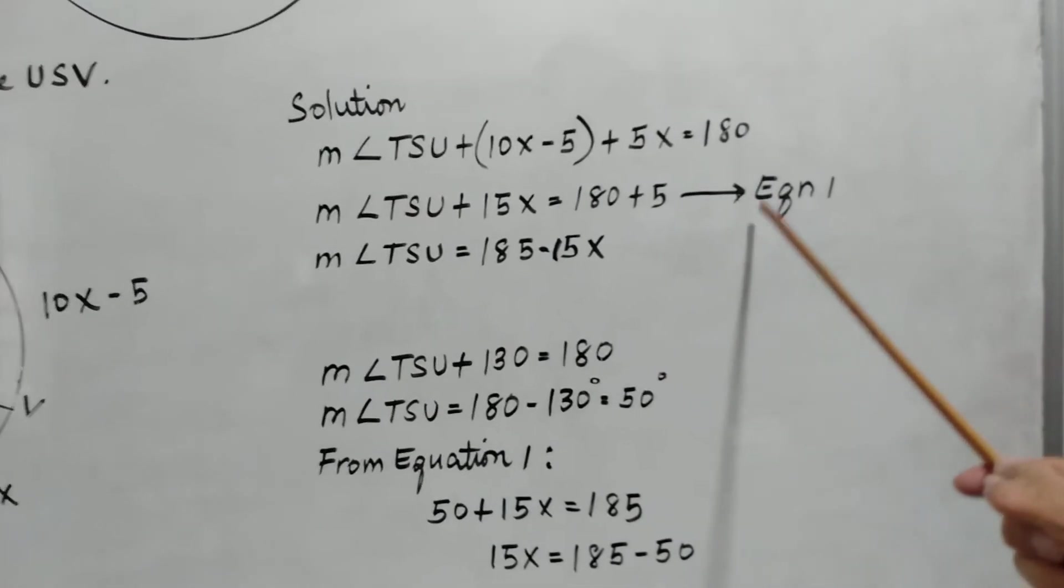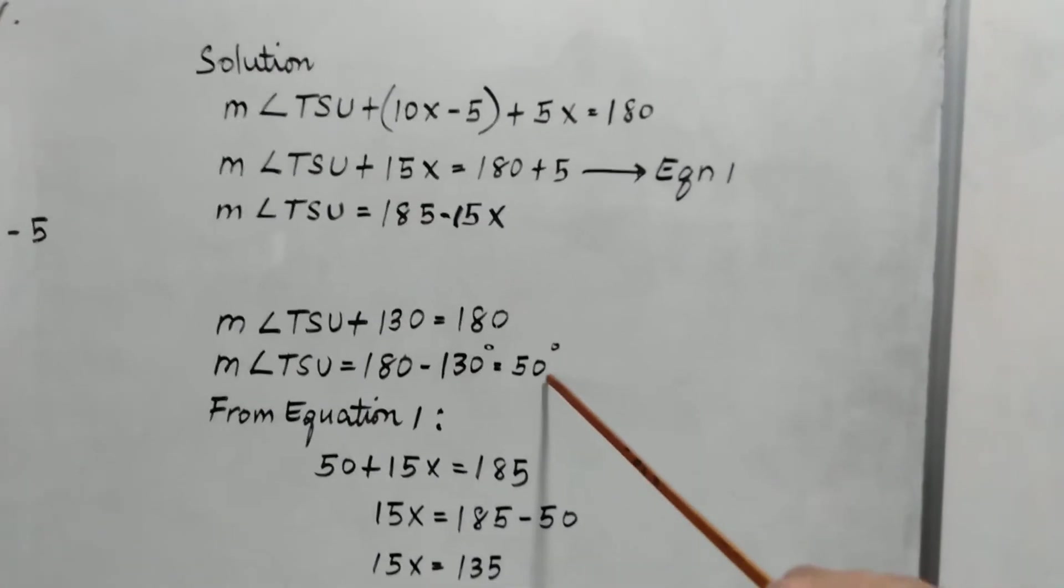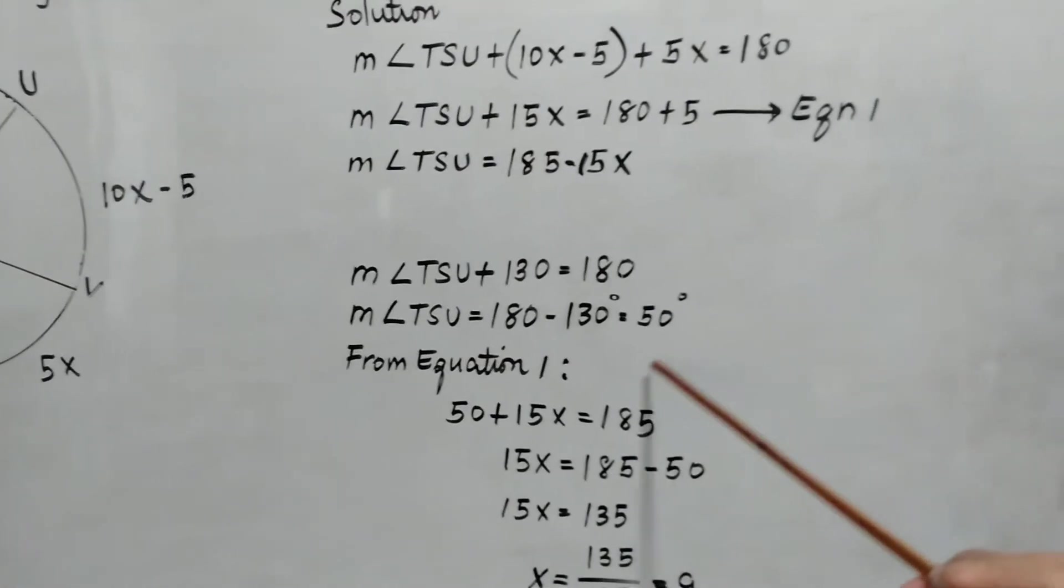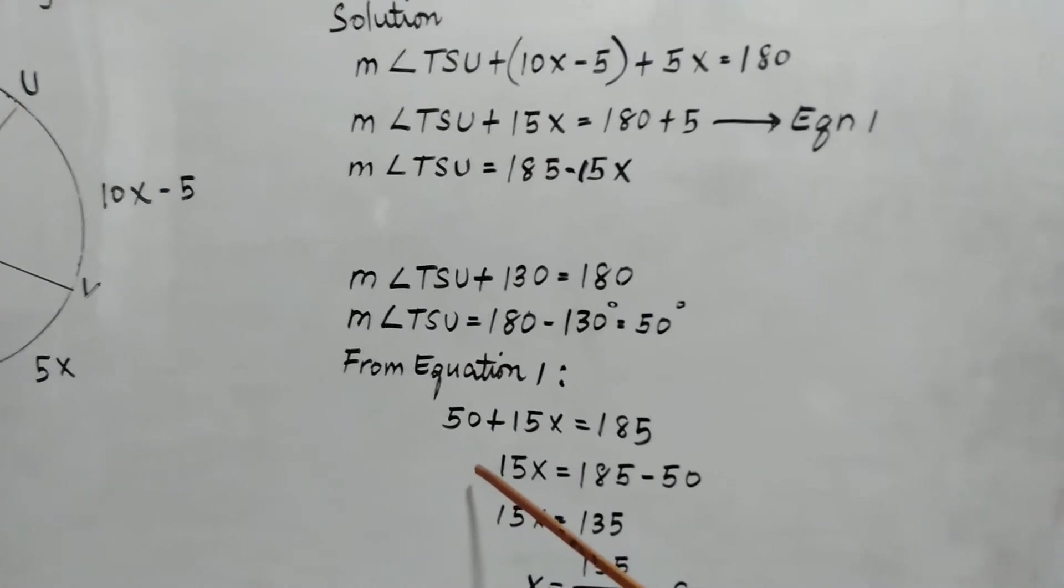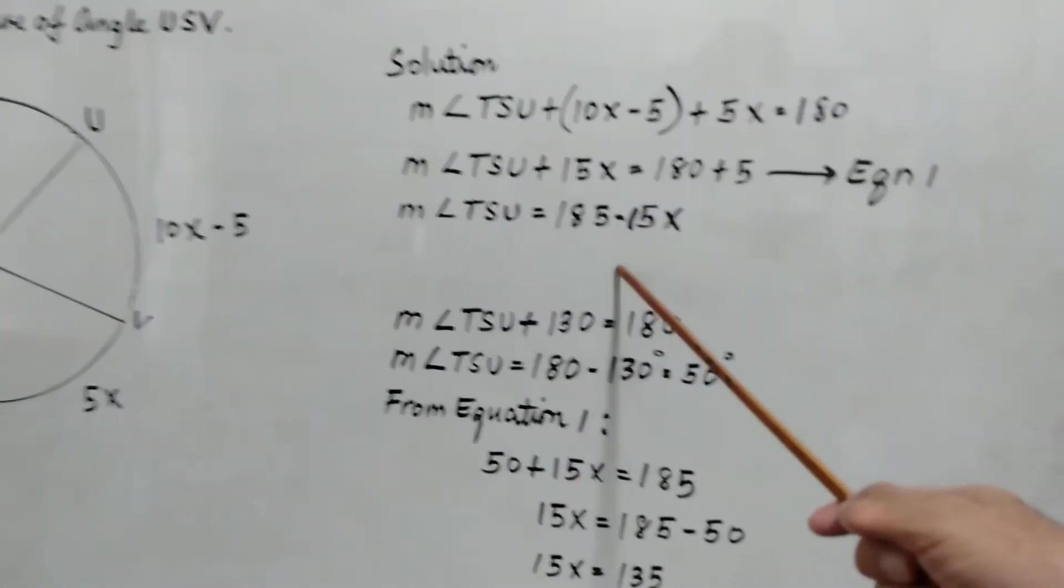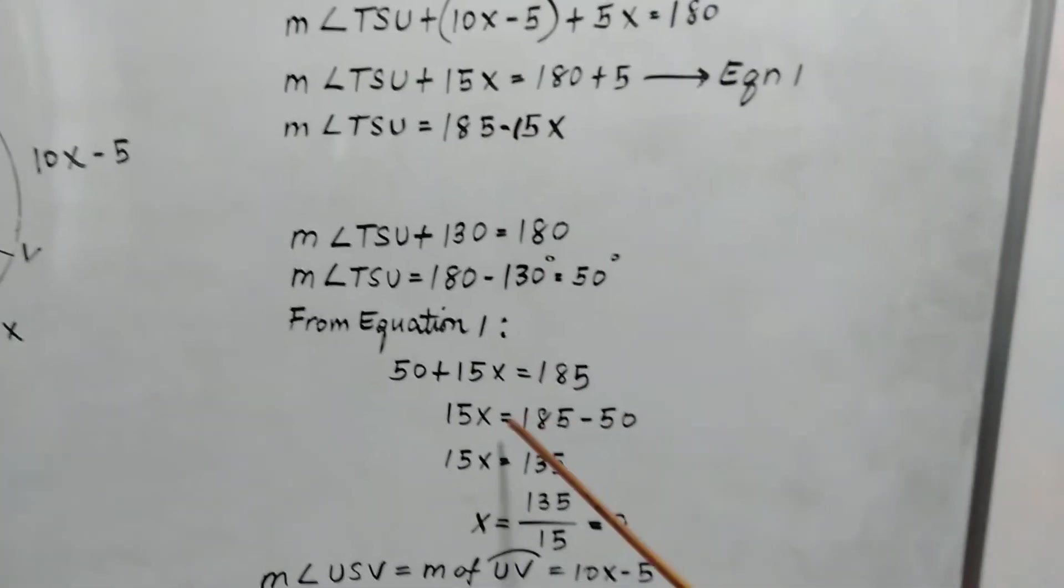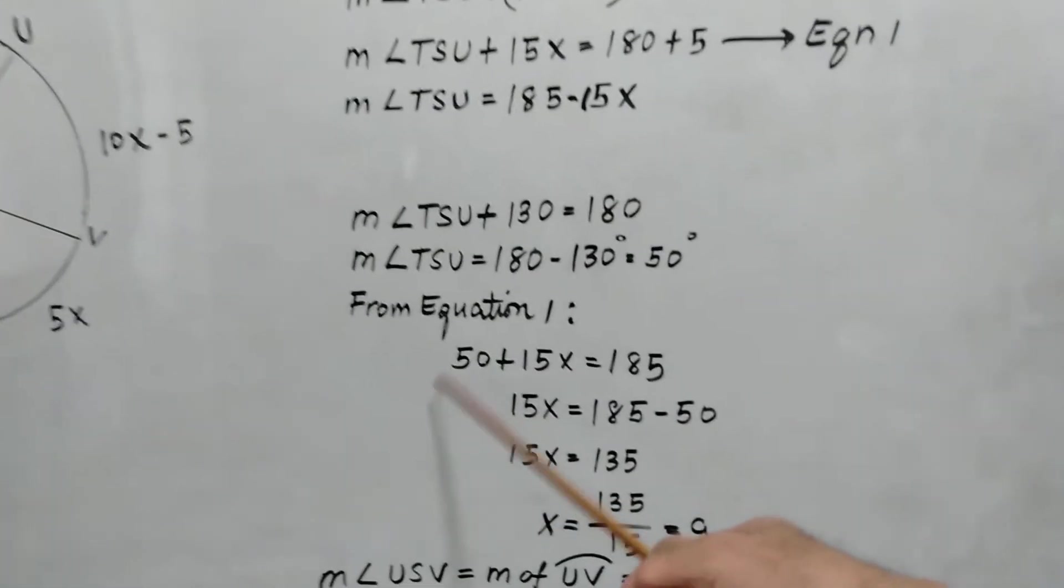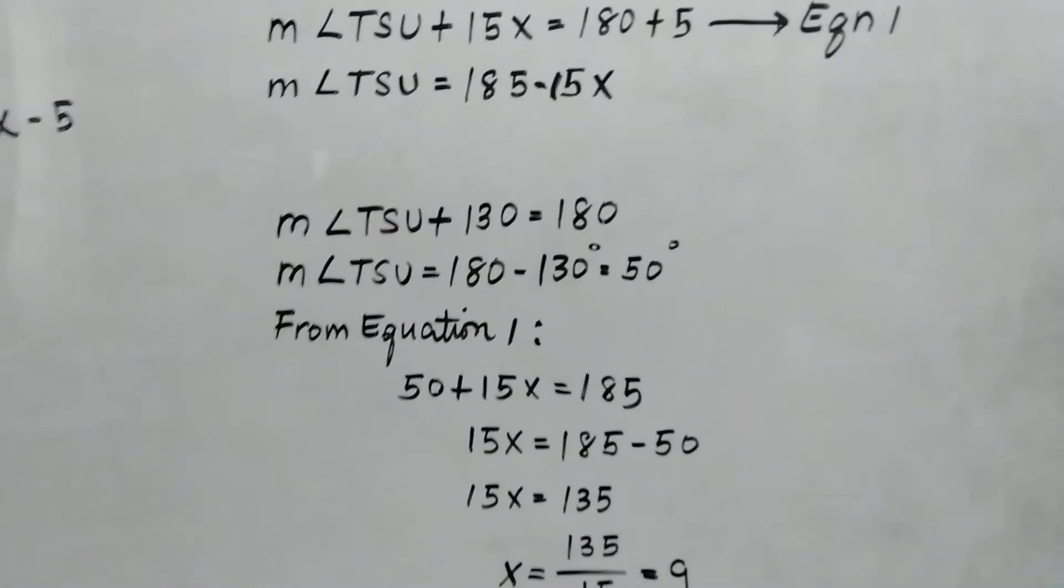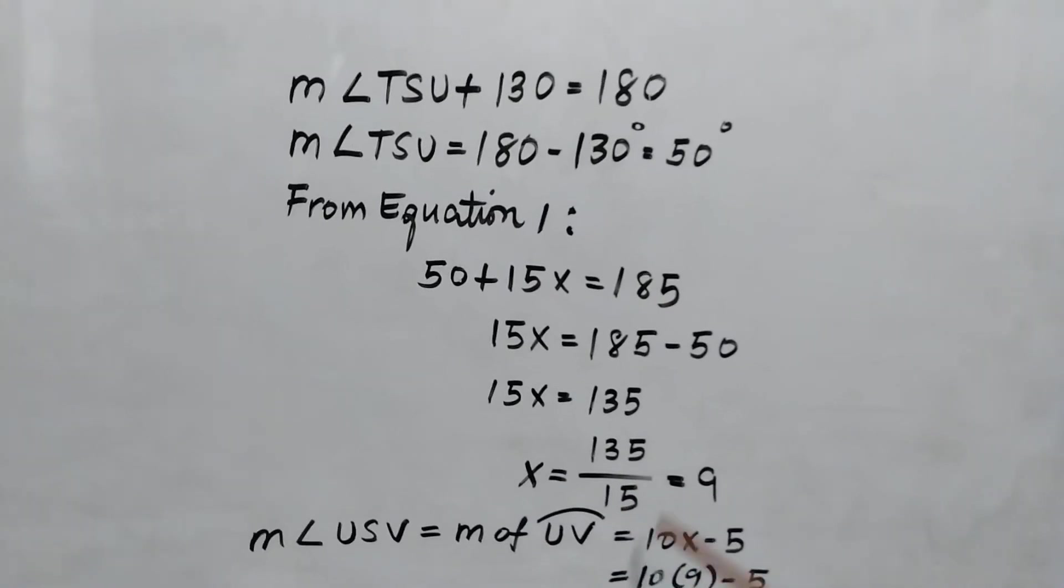So from equation 1, since we get the value of TSU to be 50 degrees, you just substitute 50 plus 15X is equal to 185. So 15X, you transpose again, 50 degrees, this becomes negative, 185 minus 50. So 15X is equal to 135. To get the value of X, we divide both sides of the equation by 15, 135 over 15 is equal to 9.